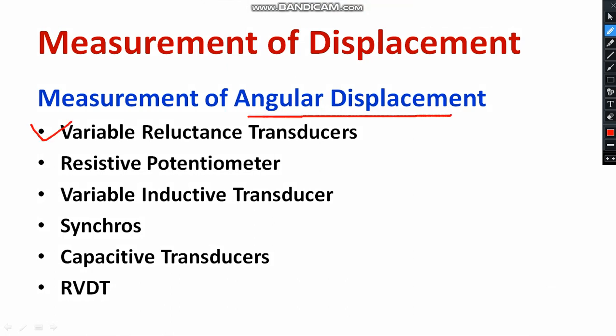You can use variable reluctance transducers. Resistive potentiometer is another simple method. You can also use variable inductive transducers.